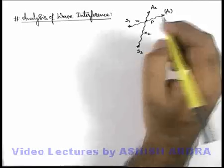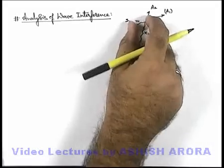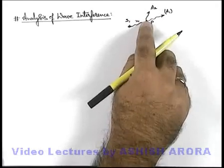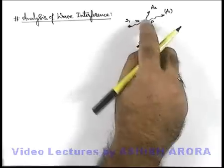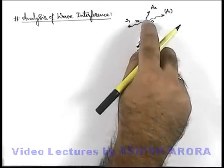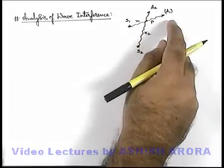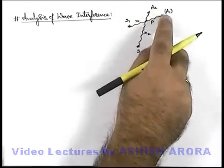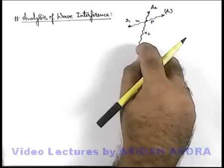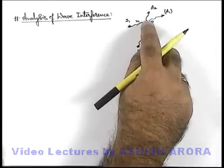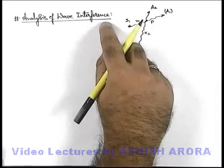We can directly state that if the two sources are started simultaneously, as x1 is less than x2, P will start oscillating with amplitude A1 under the influence of S1. And after some time when the wave from S2 also arrives at P, it will start oscillating with some new amplitude — certainly not A2, because it was earlier oscillating with A1. So as soon as the wave from S2 arrives, its oscillation amplitude will be modified according to the phenomenon of interference.